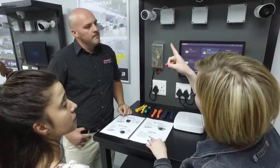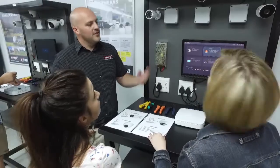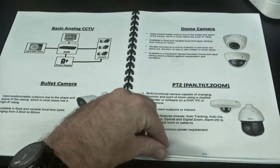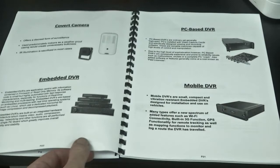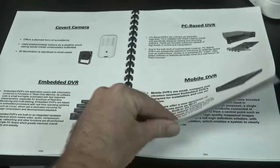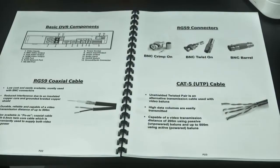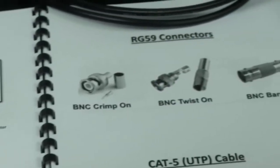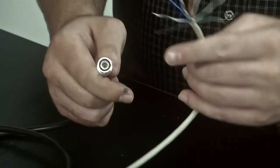Monitors and power supplies are also covered. The available cameras are looked at, such as domes, bullets, and PTZs. The recorder, which can be either an analog DVR or an IP NVR, are discussed. We look at available connection types including copper, wireless, and fibre types.